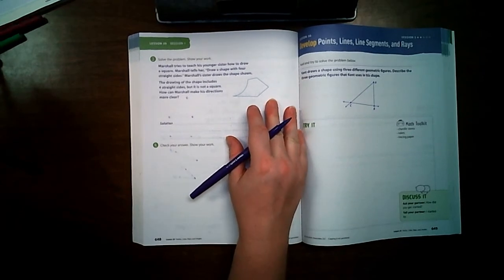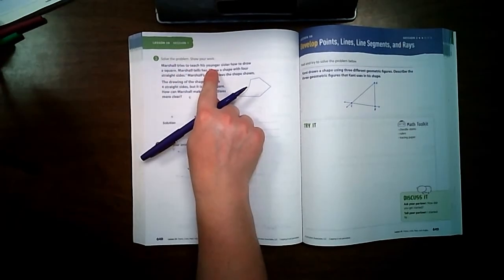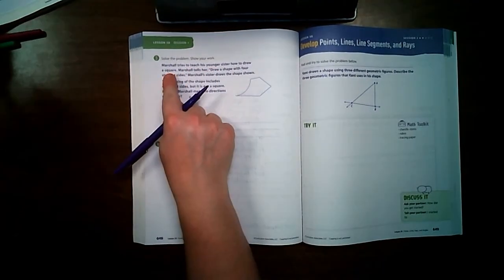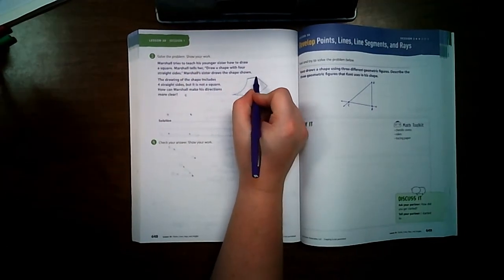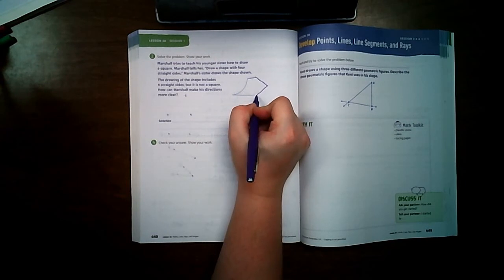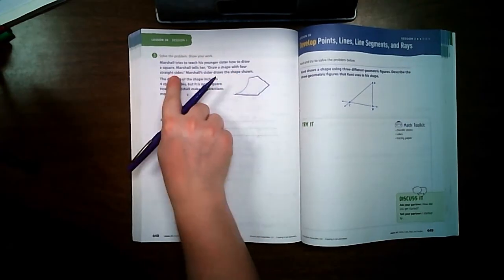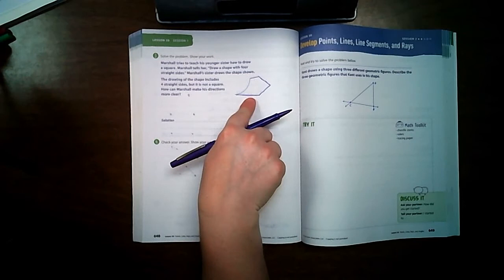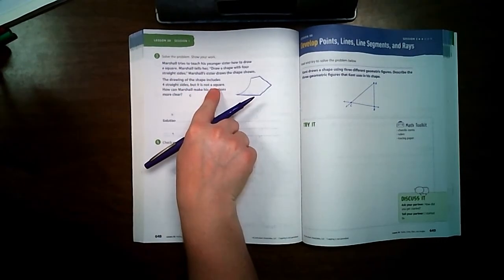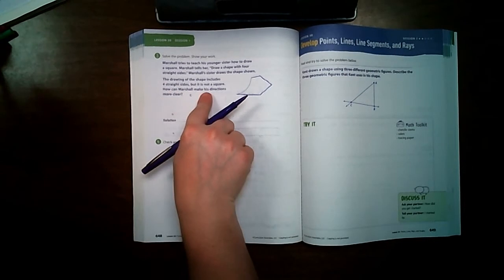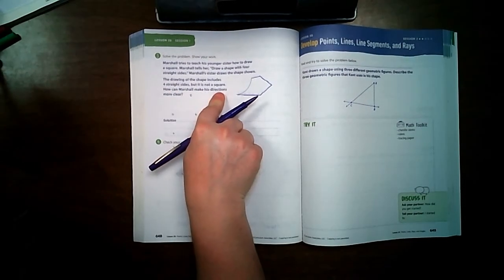Marshall tries to teach his younger sister how to draw a square. Marshall tells her, draw a shape with four straight sides: one, two, three, four. Marshall's sister draws the shape below. The drawing of the shape includes four straight sides, but it is not a square. How can Marshall make his directions more clear?